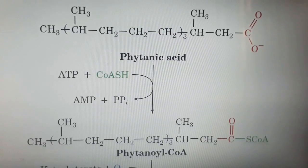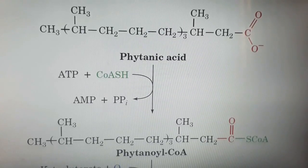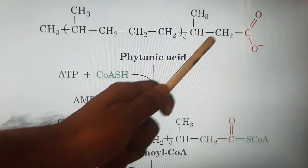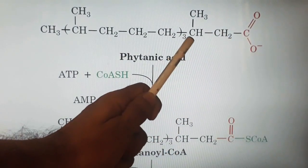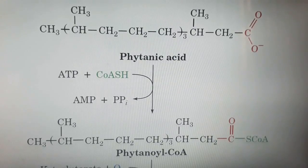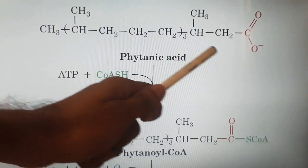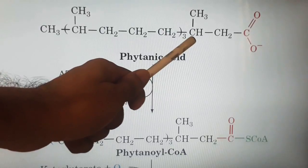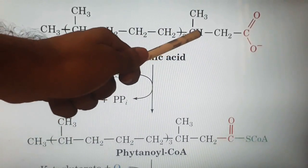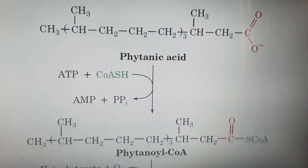Today we are going to discuss what is alpha oxidation of fatty acids and how it happens. First, we need to see what is the alpha carbon and how it is oxidized. This is phytanic acid, a long-chain branched fatty acid. This is the carboxylic group, this is the alpha carbon, and this is the beta carbon. Generally, the beta carbon is oxidized and two carbons are released as acetyl-CoA, but when the beta carbon is branched or methylated, it cannot be oxidized by the process of beta oxidation, so alpha oxidation takes place.